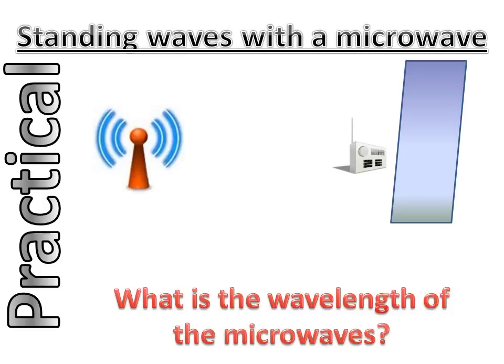The receiver would pick up maximas and minimas. So you can measure the wavelength of the microwaves by marking out every antinode or node. Once again, the distance between two nodes or antinodes would be half of a wavelength for the microwaves.